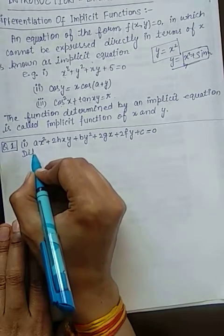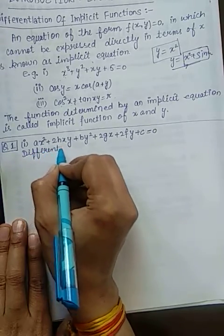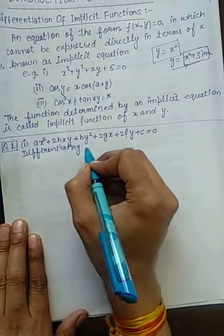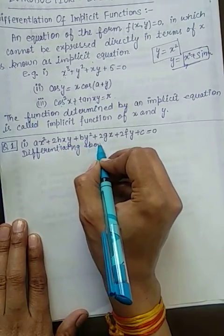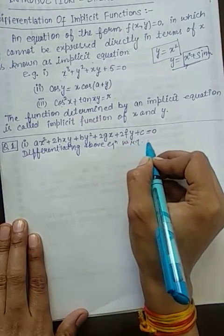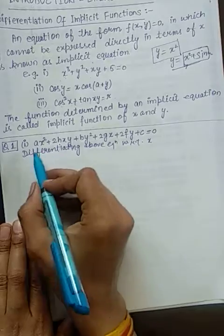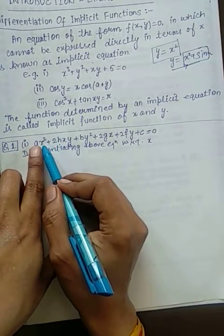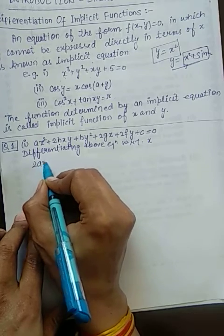Differentiating above equation with respect to x. So it will be derivative of x² is 2x, so it will be 2ax.